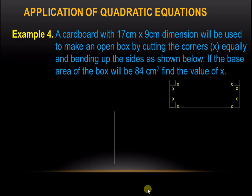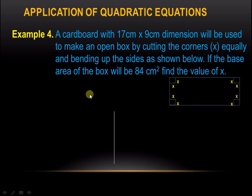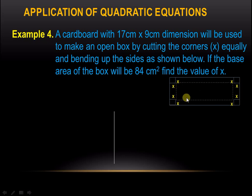Example 4. A cardboard with dimensions 17 cm by 19 cm will be used to make an open box by cutting the corners equally and bending up the sides. If the base area of the box will be 84 square centimeters, find the value of x. This is the base area only — this is the part we are considering for the area.